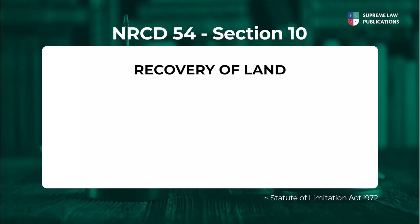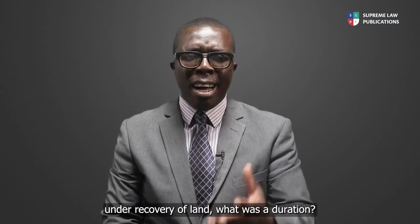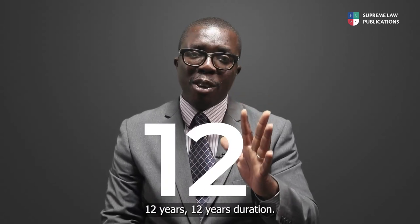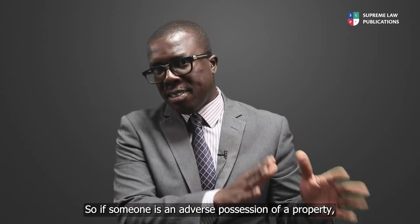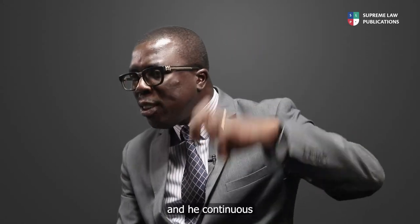Under Section 10 of the NRCD 54, it gives clarity on what the time duration should be. Section 10 of the Limitation Act 1972, NRCD 54, provides as follows, under the heading Recovery of Land: 'A person shall not bring an action to recover land after the expiration of 12 years from the date on which the right of action accrued to the person bringing it, or if it first accrued to a person through whom the first-mentioned claims, to that person.' The duration is 12 years.